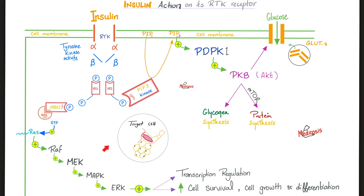Insulin binds to its receptor — the insulin receptor, or receptor tyrosine kinase, which has an intrinsic tyrosine kinase activity. Kinase adds phosphate — autophosphorylation. Strong, independent — I don't need help; I am self-sufficient. We activate each other. You have two alpha subunits and two beta subunits; we activate each other and don't need help from outside forces. There is no need for G-protein or GTP.